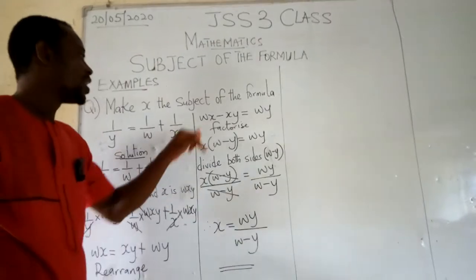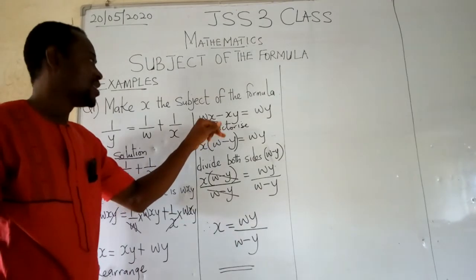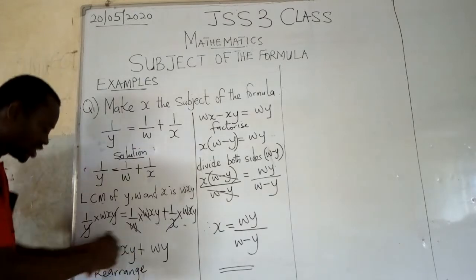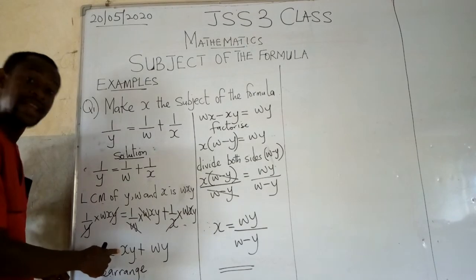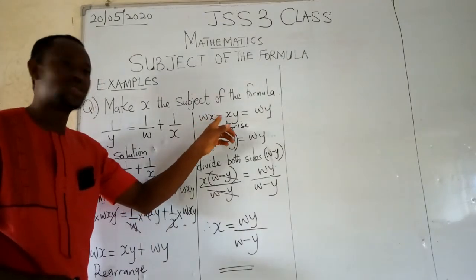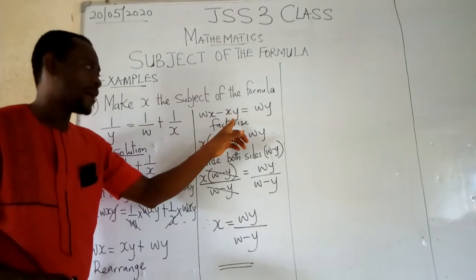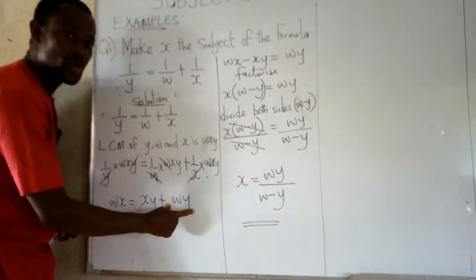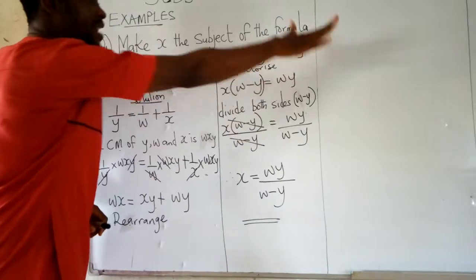Then we come to this area, w x. When we bring in this x y this way, it becomes what? Negative. So we now have w x minus x y equals, because this one is off, what is remaining? W y. So it is standing there.